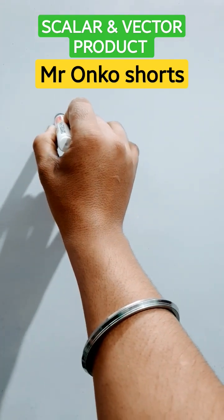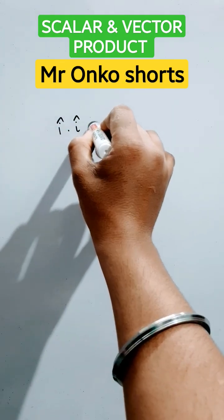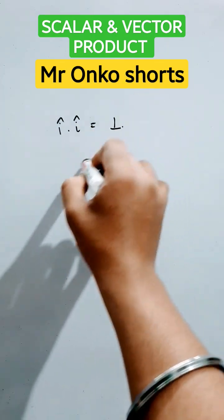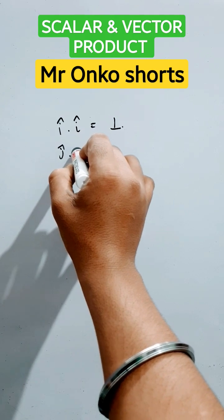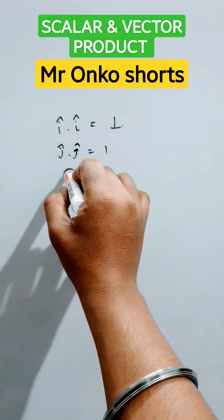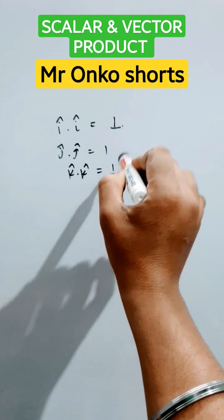First of all, i cap dot i cap, that is obviously equals to one. Similar for j cap dot j cap and that's also for k cap dot k cap.